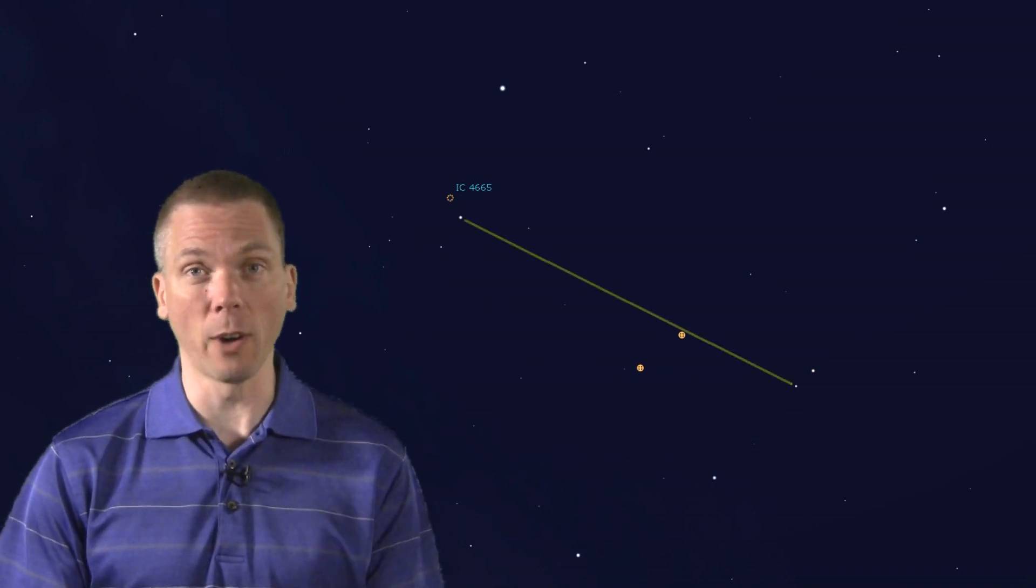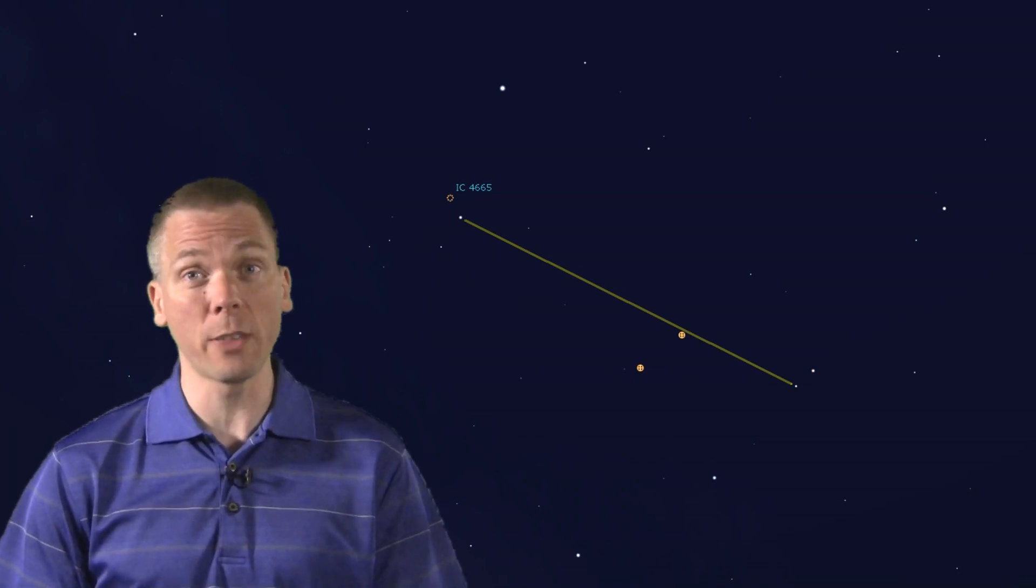This is where drawing straight lines and finding intersections, just like in high school geometry, finally comes in handy. First, look at a line from Yed Posterior up to Sebelrei. It's quite a distance, a good 23 degrees of sky.